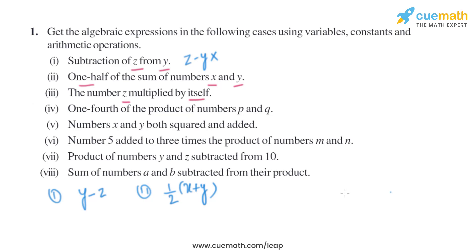Now let's move on to the third part: the number z multiplied by itself. So basically we are multiplying z by itself, which can be written as z into z, which is the same as z squared.